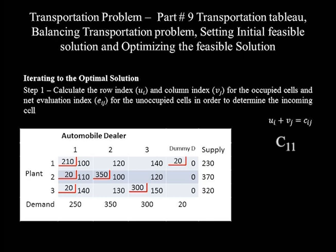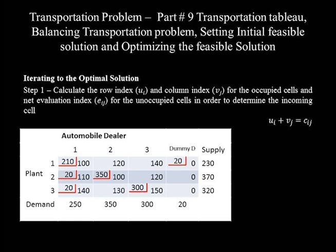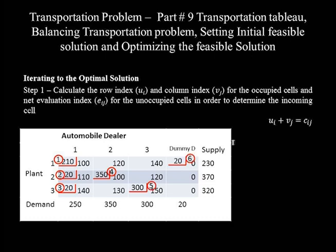The total number of occupied cells must equal m plus n minus 1, where m is the number of rows and n the number of columns. The number of occupied cells is 6, and m plus n minus 1 equals 3 plus 4 minus 1, which is also 6. Since these are equal, we can proceed. Row and column indexes are assigned as u1, u2, u3 and v1, v2, v3, v4. Since the number of unknowns (7) exceeds the number of equations (6), the row index of the first row, u1, is always set to 0.